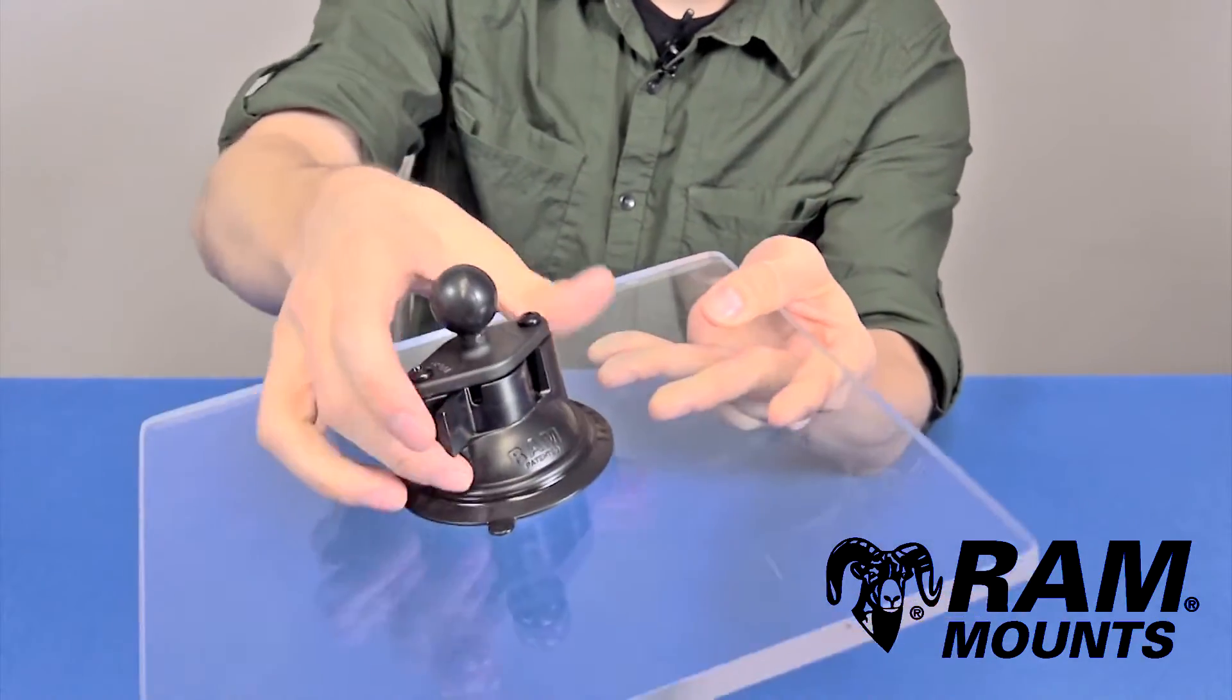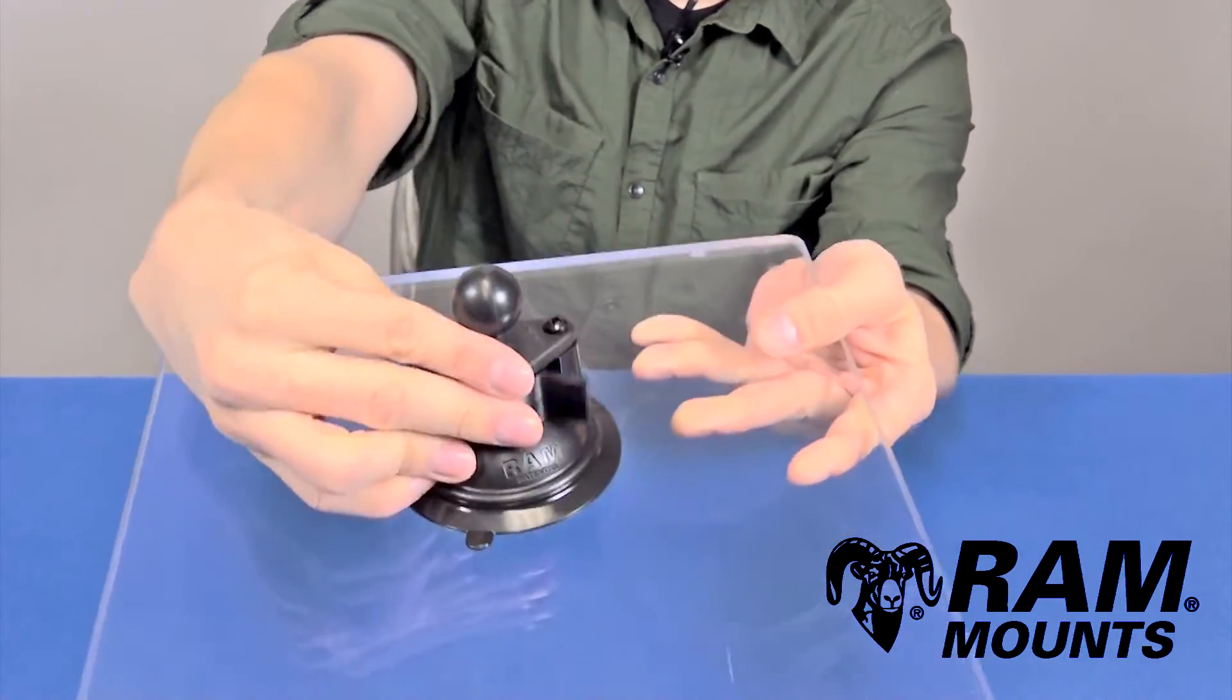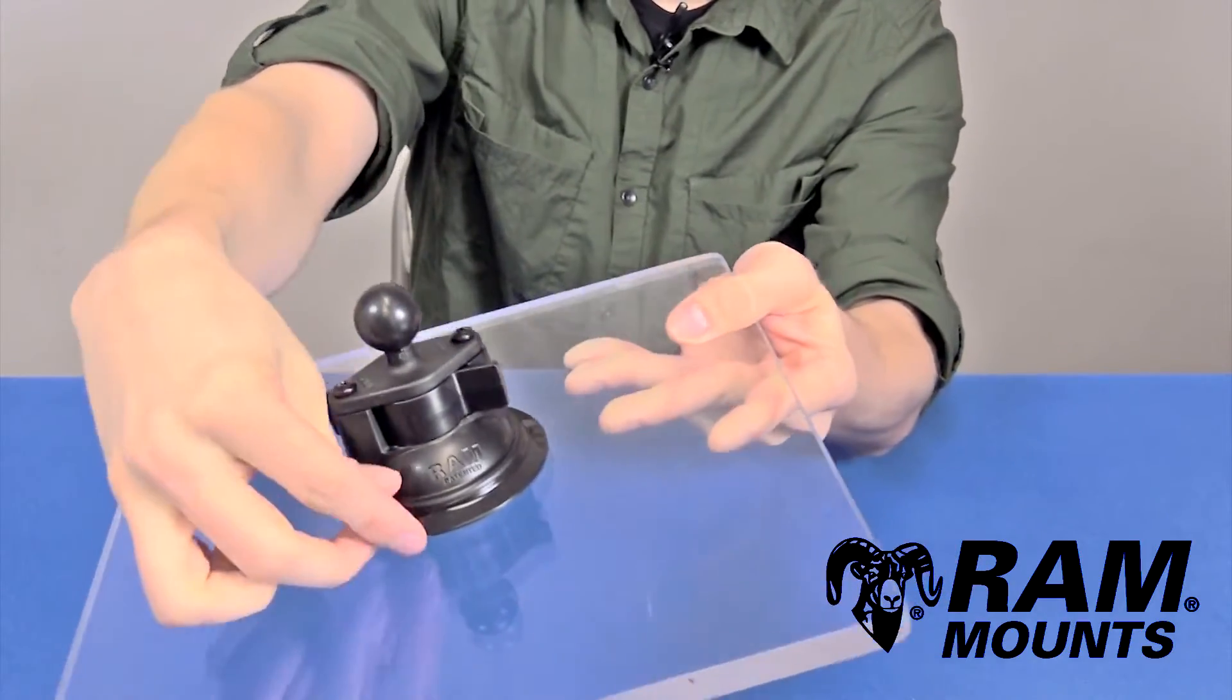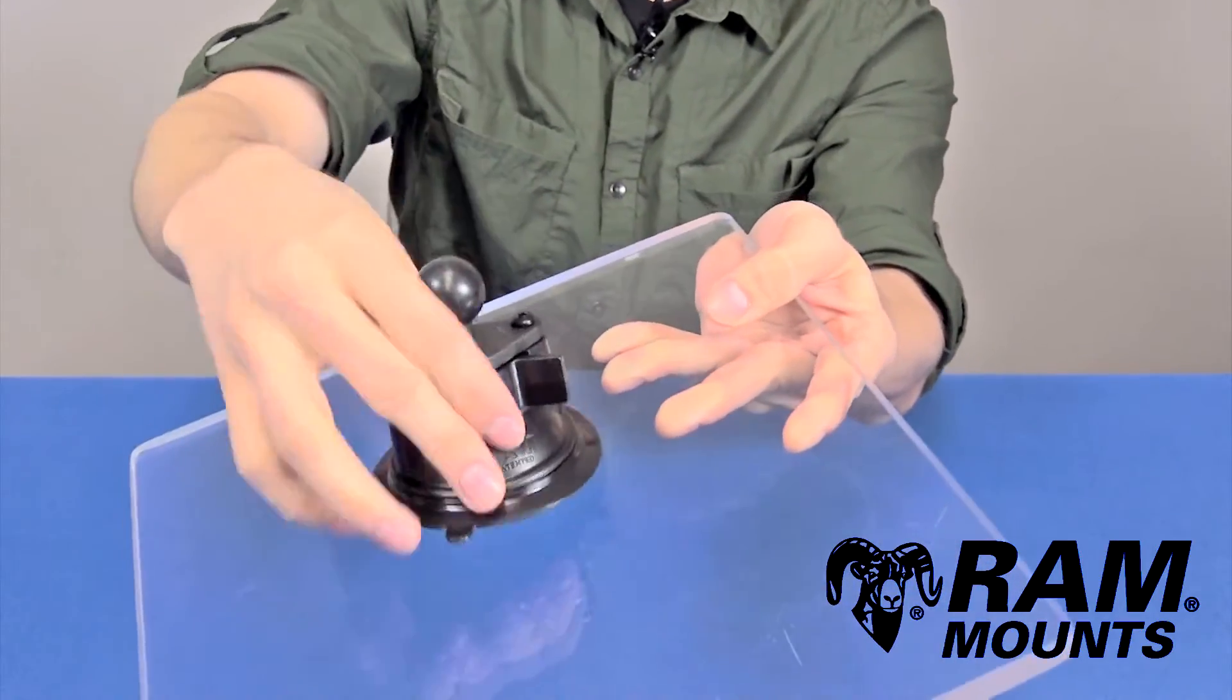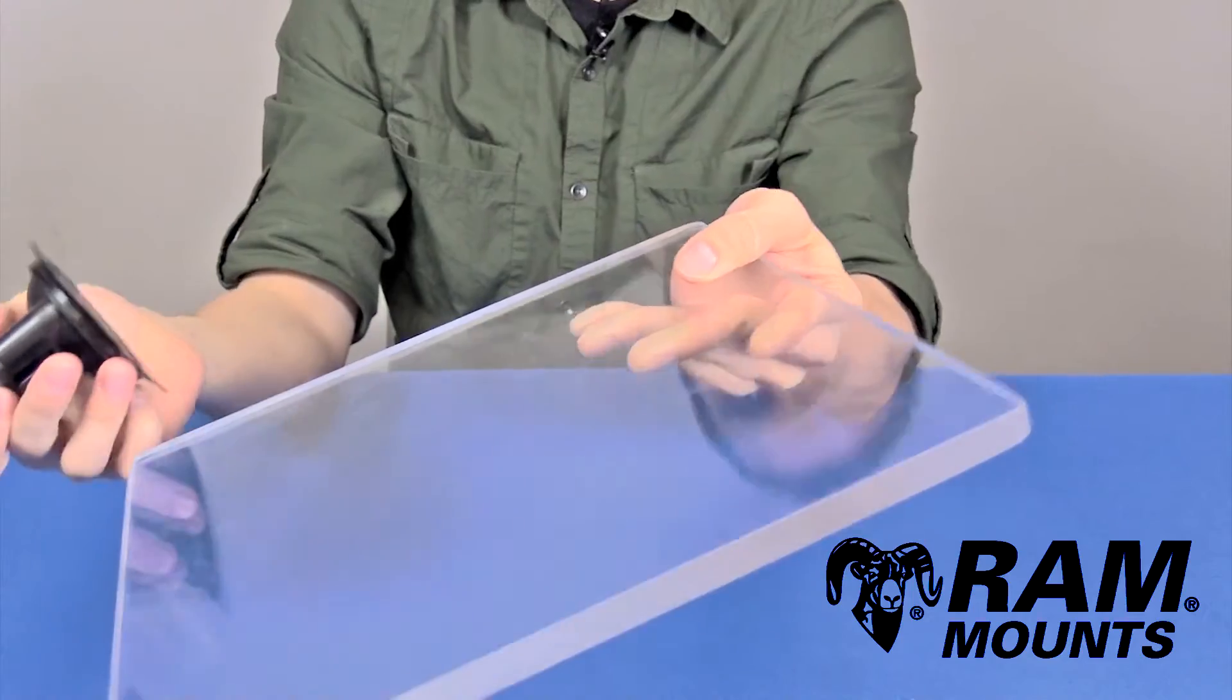And to remove the suction, you simply twist the latch back in the opposite direction, and then you peel on the notch shown here to peel the suction cup off, and you're left with the clean surface.